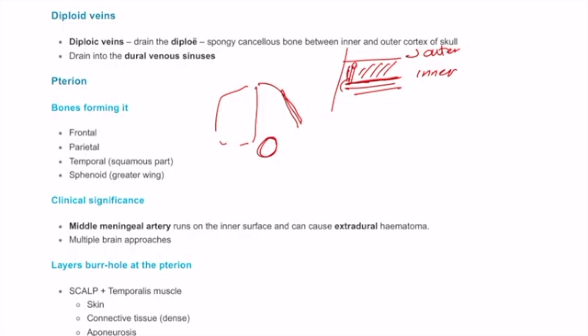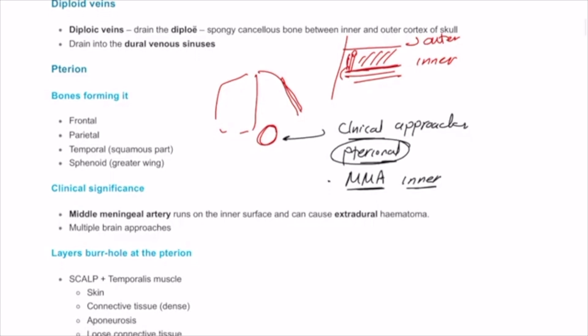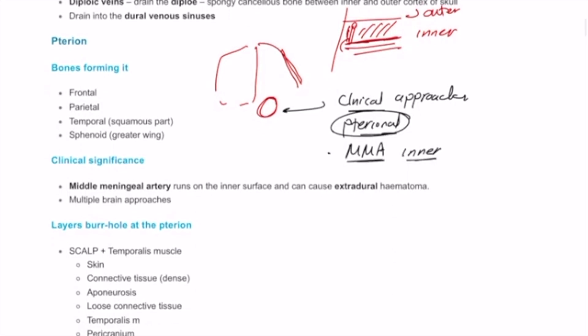The pterion is quite an important structure which represents multiple clinical approaches for many different surgeries including the aneurysmal surgery, the pterional approach. It's also important because the middle meningeal artery passes on the inner side of the pterion, so any injury to the side of the head can lead to an epidural or extradural hematoma.